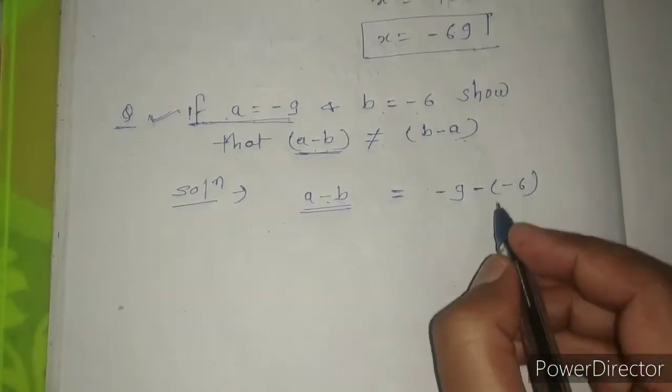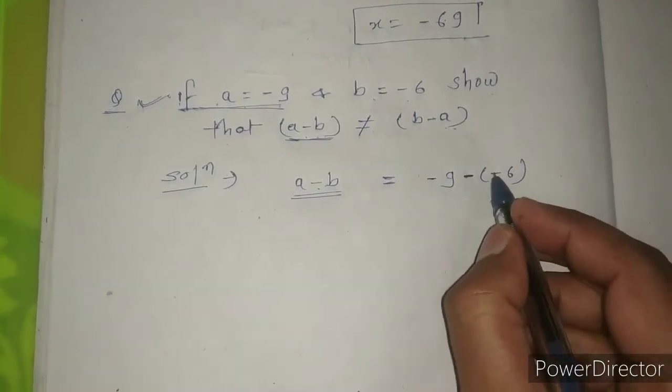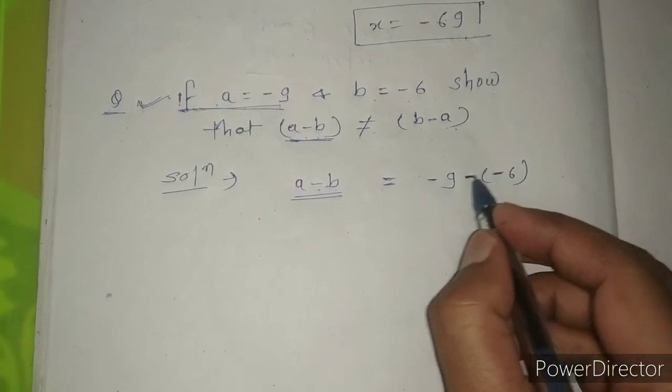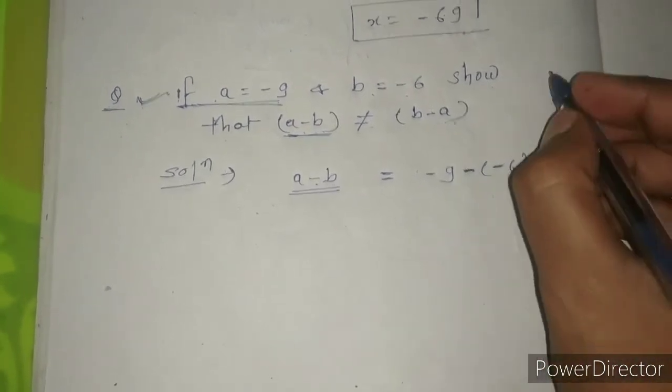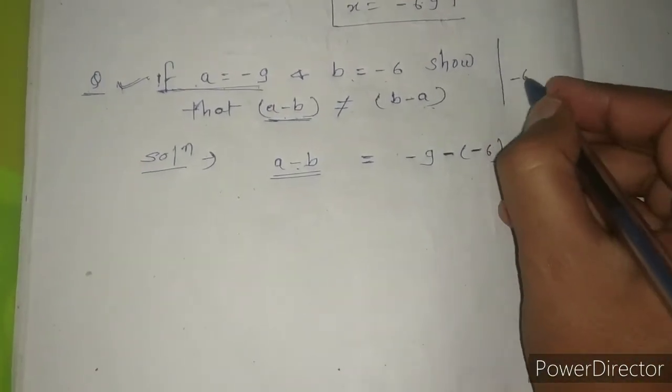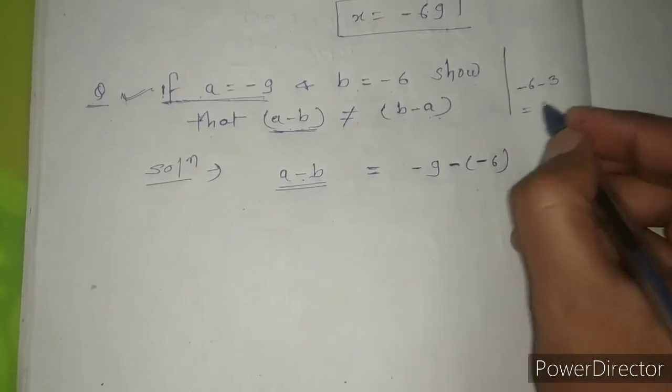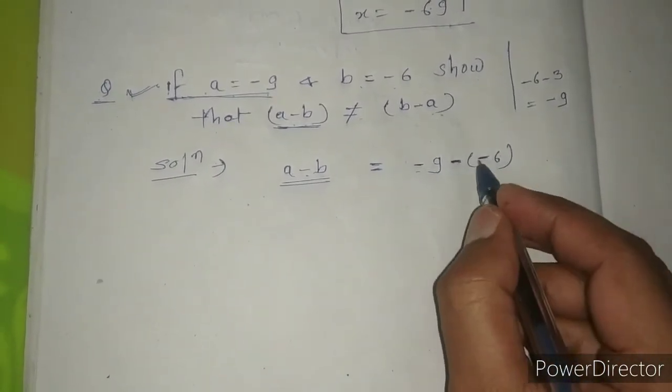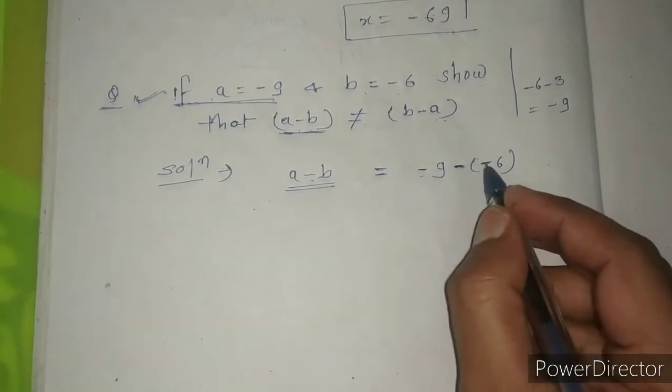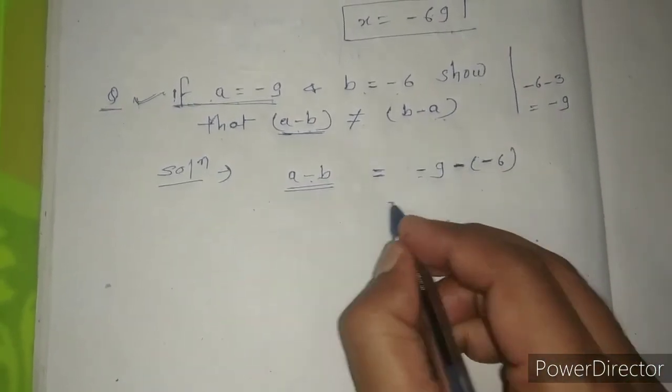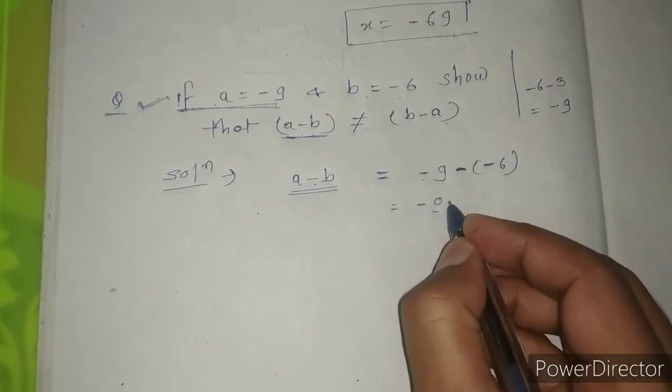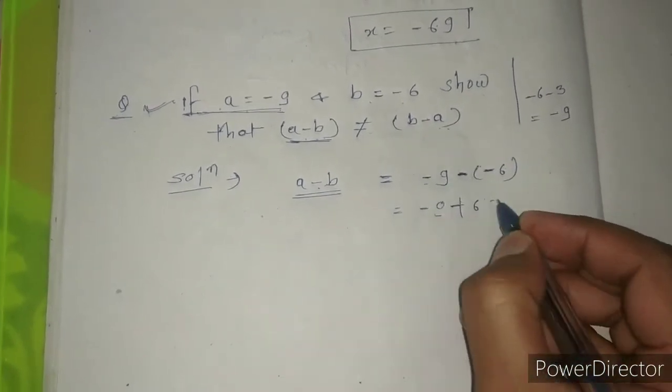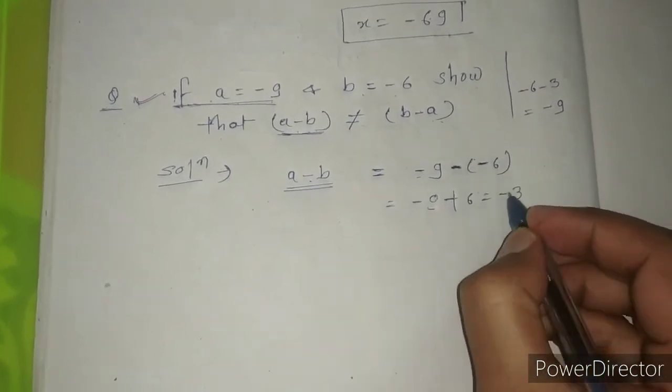What is minus minus? It's plus. In case of minus 9 minus, and again here minus, which is already minus, minus minus becomes plus. So minus 9 plus 6, which is minus 3, right?